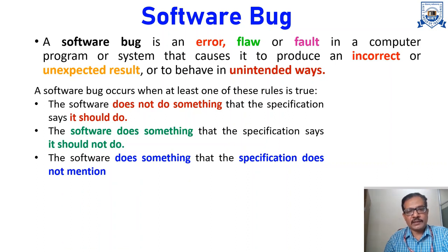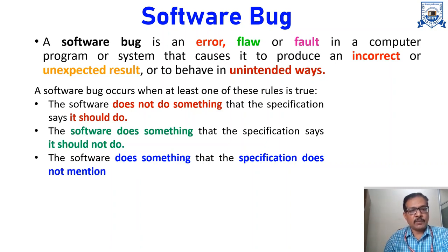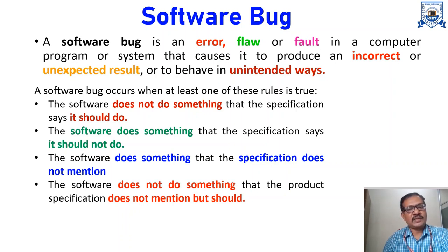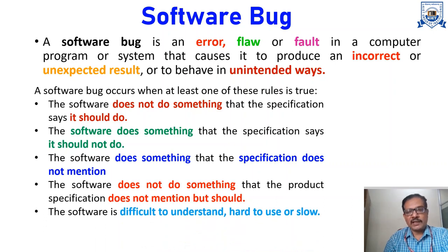The third rule is: the software does something that the specification does not mention — then we can say the software has a bug. The fourth rule is: the software does not do something that the specification does not mention but should. That means the system should behave in a certain way, but it is not mentioned in the specification and the software is also not doing it. The fifth rule is: the software is difficult to understand, hard to use, or it is slow — then also we can say the software has a bug.